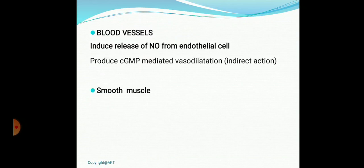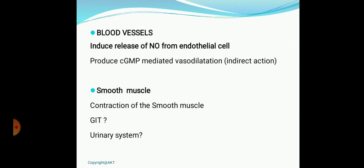Effect on smooth muscles is contraction. On the GI tract, acetylcholine increases tone and peristalsis, increasing GI motility, leading to diarrhea. In the urinary system, it increases tone and peristalsis in the ureter and urinary bladder, with smooth muscle contraction of the trigone leading to urination or increased frequency of urination. In bronchial smooth muscles, it causes bronchospasm — not prominent in normal individuals but dangerous in patients with a history of asthma or respiratory distress.